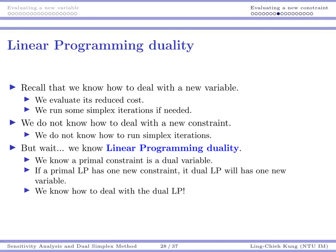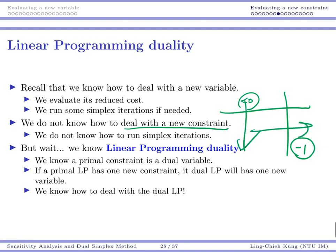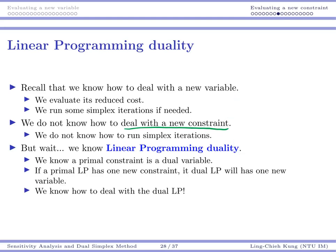We have learned that we can deal with new variables by evaluating reduced costs to see if we need to run simplex iterations. However, we have difficulty dealing with a new constraint because it produces a negative number — not like a negative reduced cost. A negative reduced cost still allows a valid simplex iteration, but an invalid basic feasible solution is tough to handle. We need more tools.